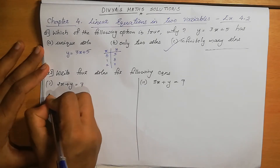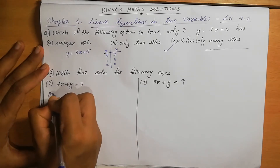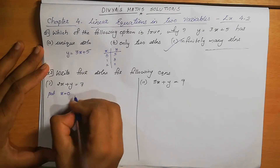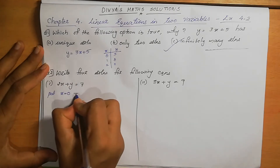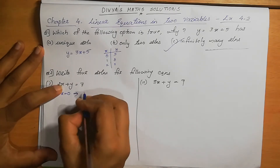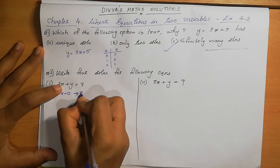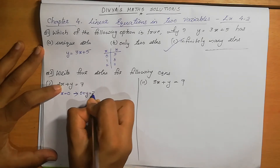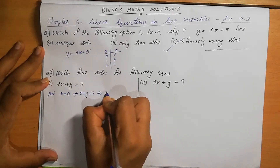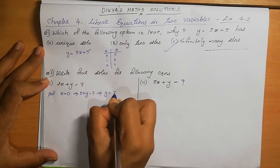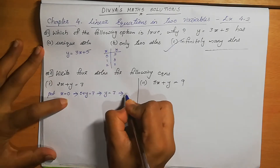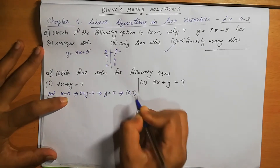Put x=0: 2×0 + y = 7, so 0 + y = 7, which gives y = 7. The solution is (0, 7).